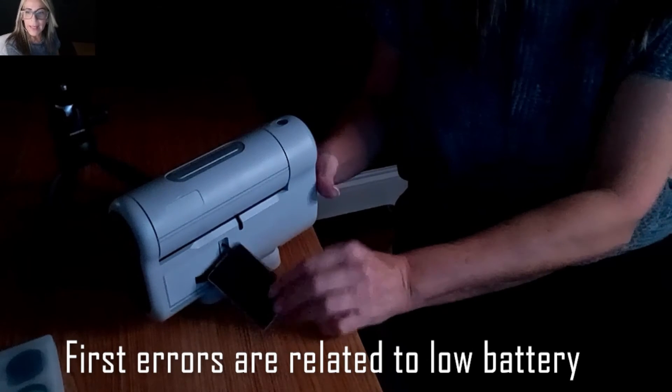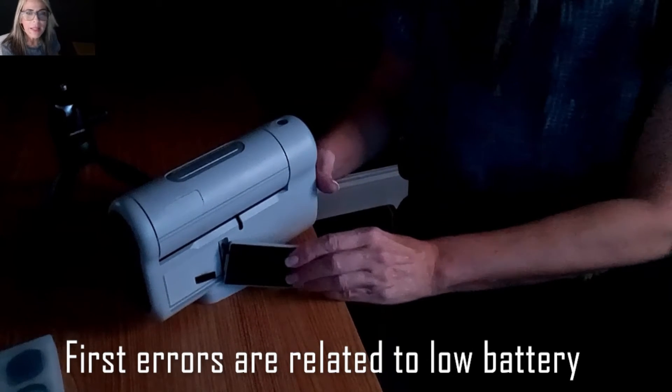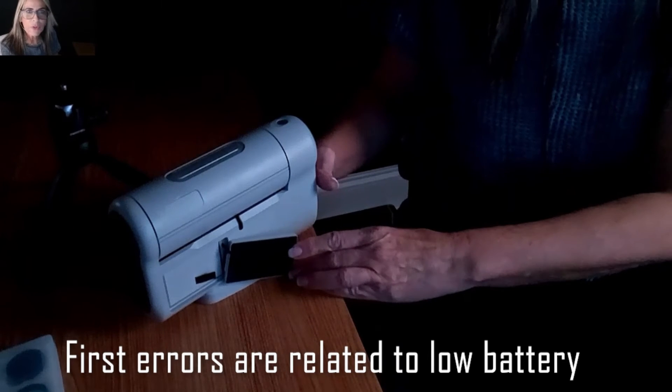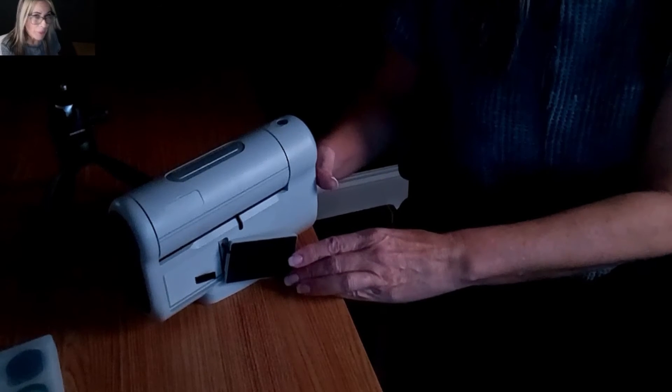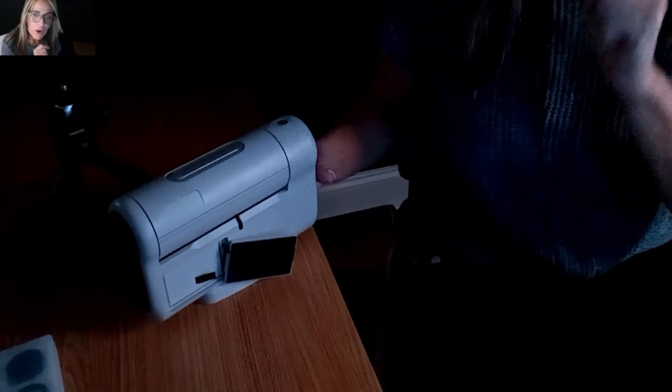Most mistakes and errors that happen at the very beginning when you get your Dwarf telescope for the first time are because the batteries are too low and it doesn't work properly.